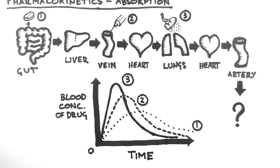Now I have three more points I want to make. Firstly, note that the area under the curve is the same for all these routes of administration. This is because the amount of exposure to the drug — that is, the dose — is the same. Just some routes of administration spread the dose out over a greater length of time.